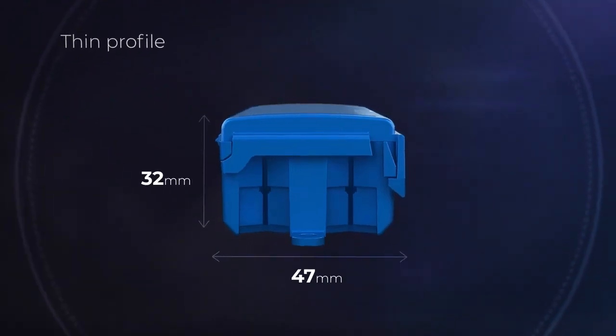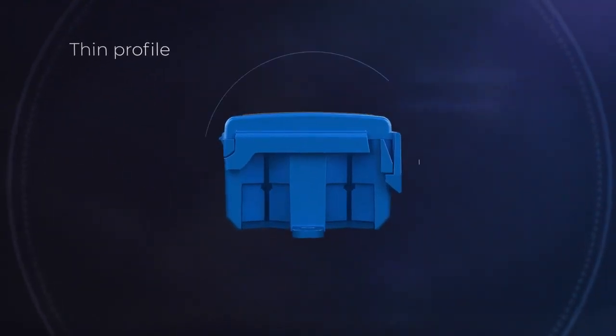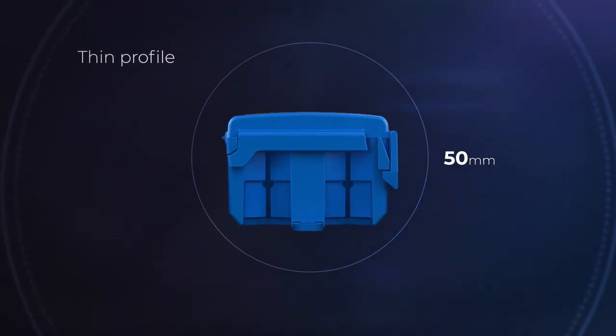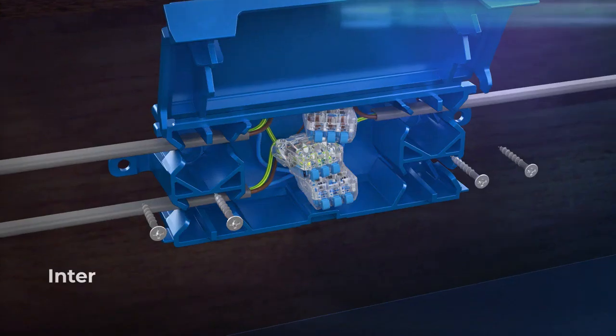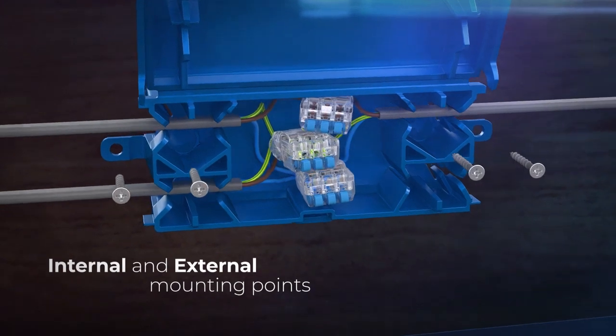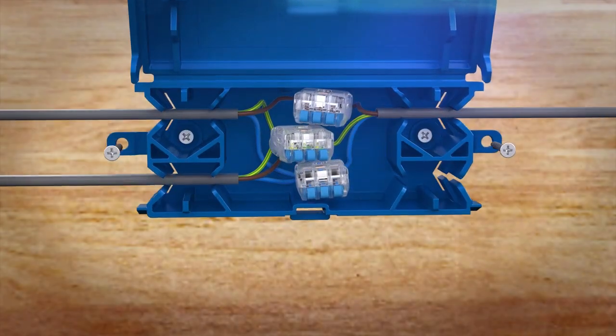A thin profile allows the Insure Box to fit to a 50mm hole for spotlight or similar installations. To finish the installation, secure the Insure Box via the internal or external mounting points.